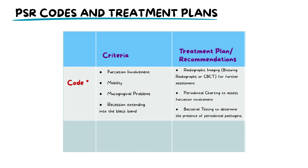Code X is used when the sextant is not scorable — for instance, if it contains fewer than two teeth. This code indicates that the sextant was not applicable for standard PSR scoring due to unique circumstances.